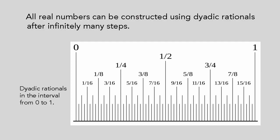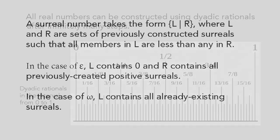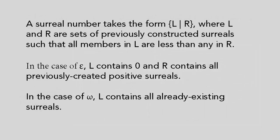After infinitely many steps, once all dyadic rationals have been constructed, one extra step is enough to create all the real numbers. It turns out that while Dedekind originally used all rational numbers in his Dedekind cuts, it's enough to use just the dyadic rationals. The reals, however, aren't the only new surreals to be created. In fact, epsilon and omega are also made at the same time.